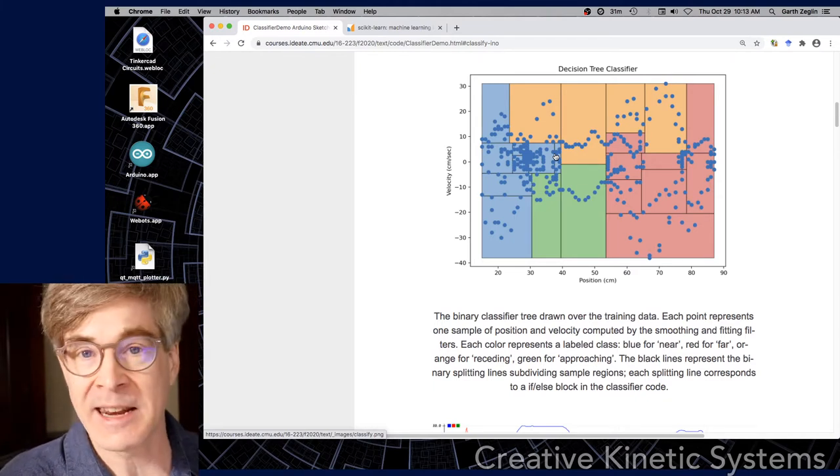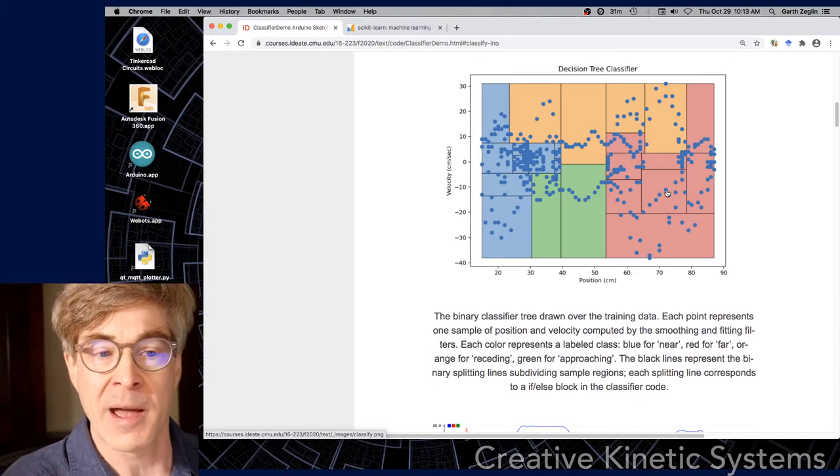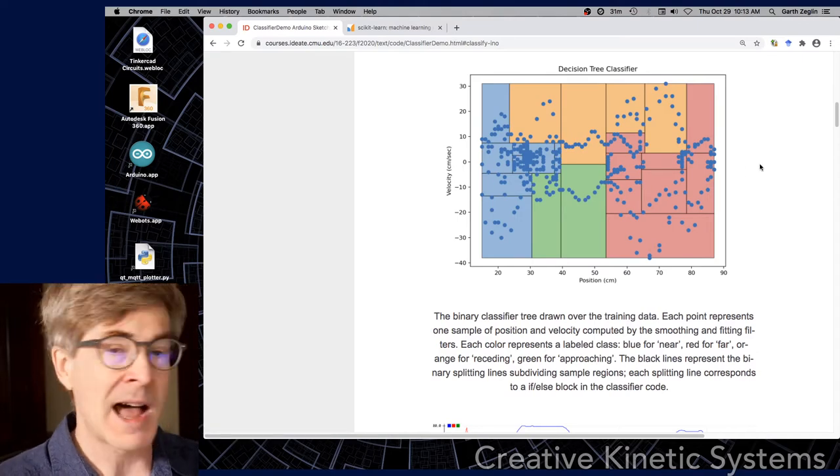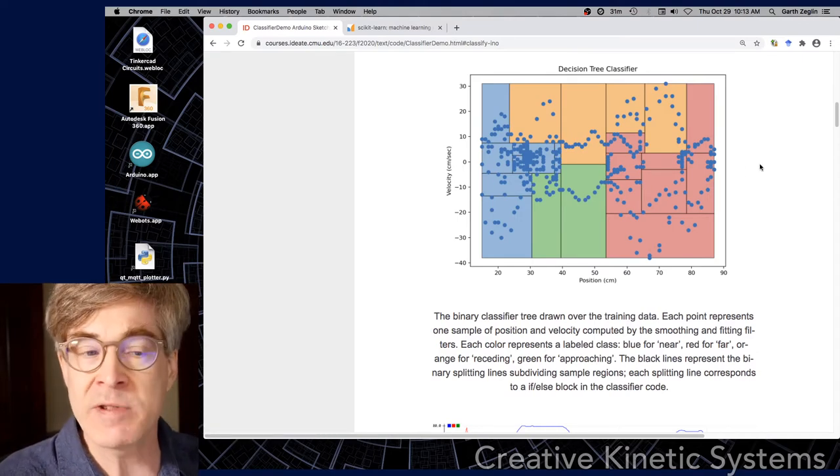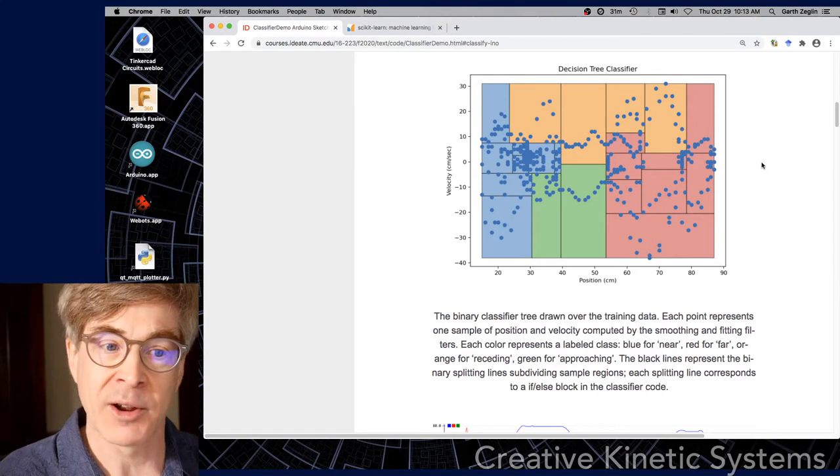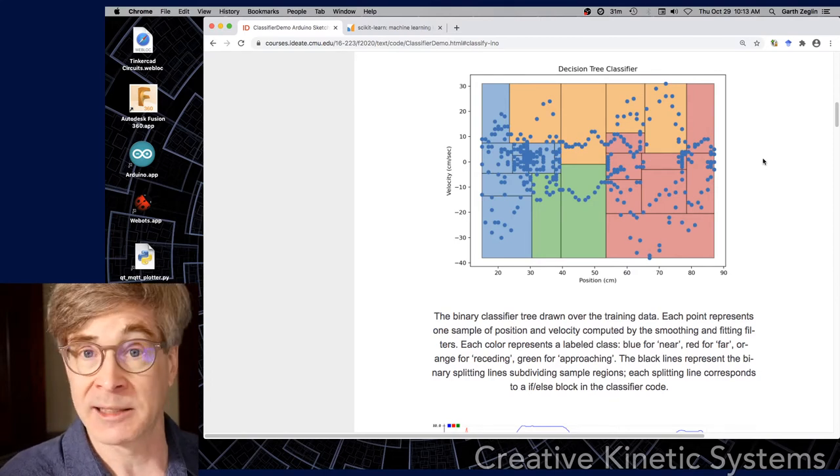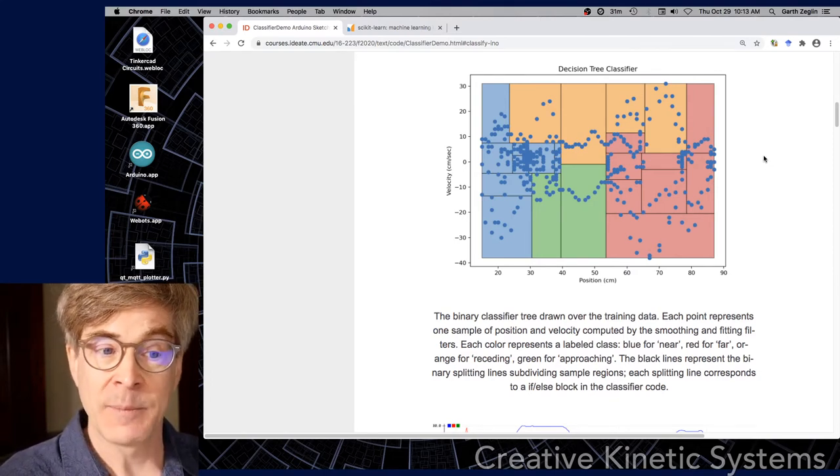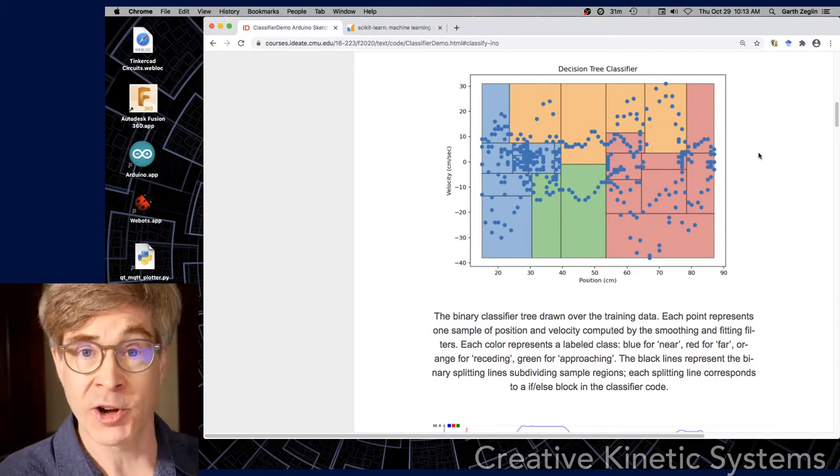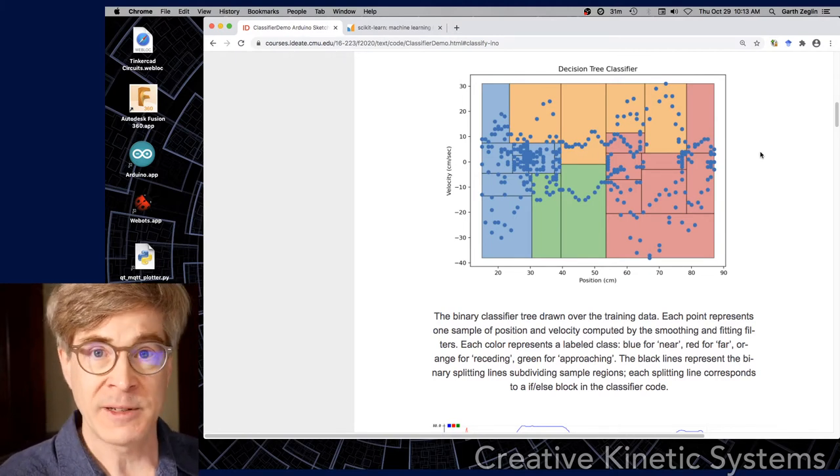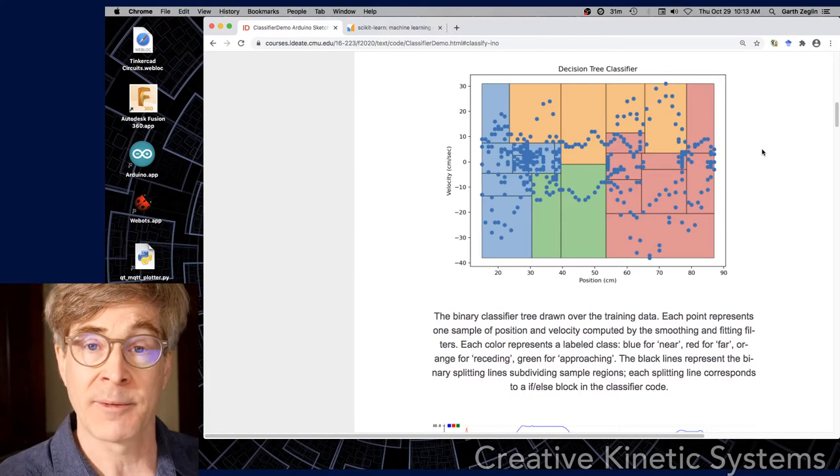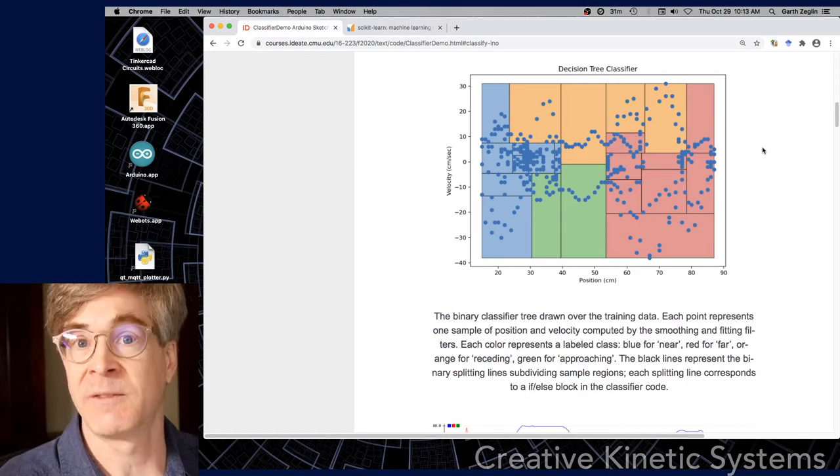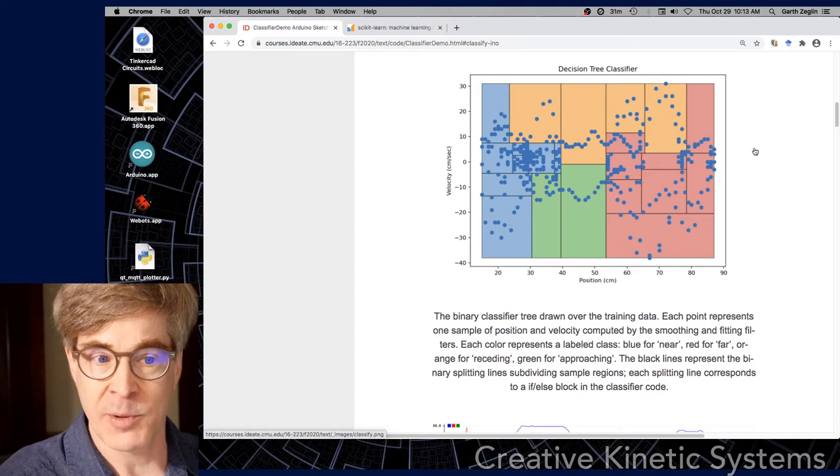Now, in theory, this data is simple enough. You probably could look at it by eye and draw some lines through it that would represent reasonable classification boundaries. And you could write that classifier tree by hand. In higher dimensions, that gets much harder. If you had three or four or five different parameters being used to classify a point, then that gets very difficult to do by eye. And that's where the algorithm comes into play.